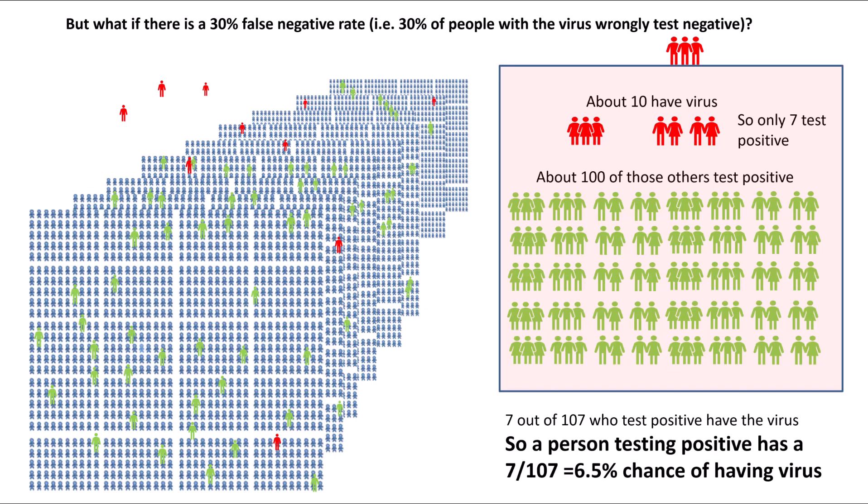Now logically, if you think about it, this does make sense. Because at the extreme, if for example the false negative rate was 100%, then nobody with the virus would test positive, meaning 100% of the positives would have to be false.